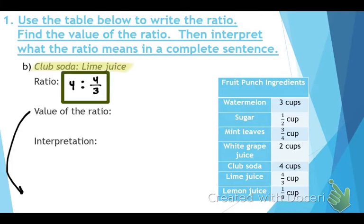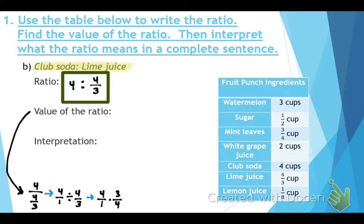To find the value of the ratio, we take four divided by four-thirds, which is four over one divided by four-thirds. Use keep-flip-change, cross-reduce, and the value of the ratio is three.